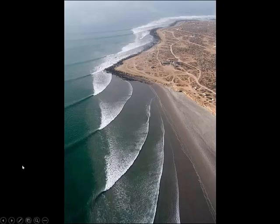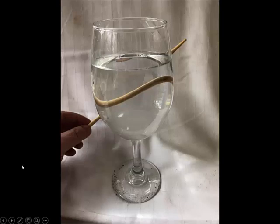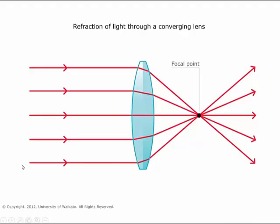Refraction happens with all wave phenomena that change speed when they change the medium of travel. Here is an image of a chopstick being seen through a glass of water, and you can see how distorted it is because of the change of direction of the light from the chopstick as it goes through the glass.